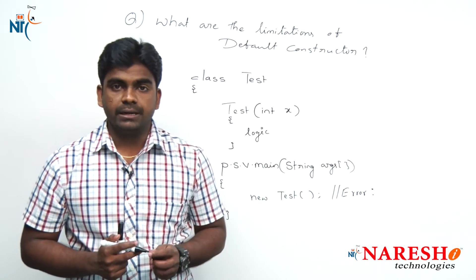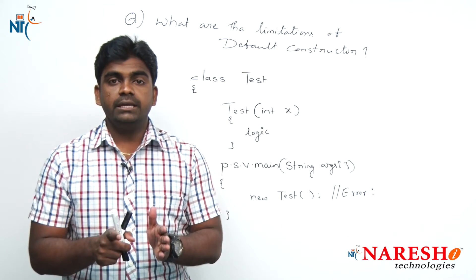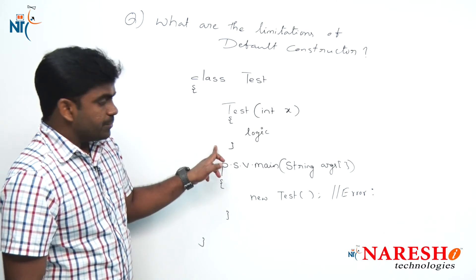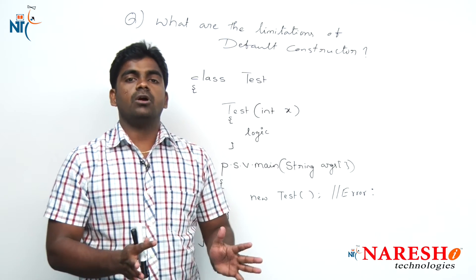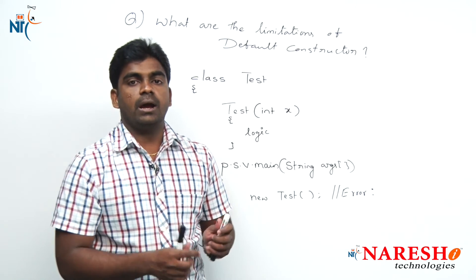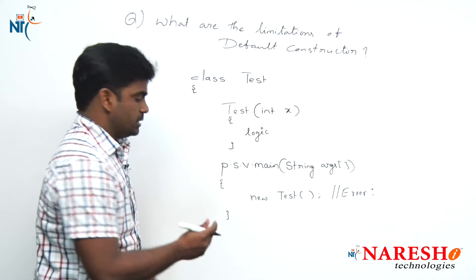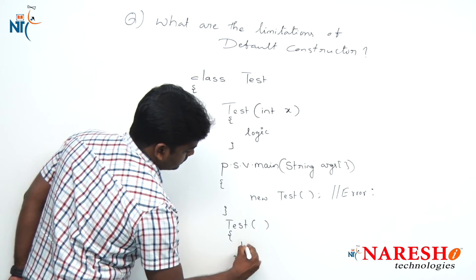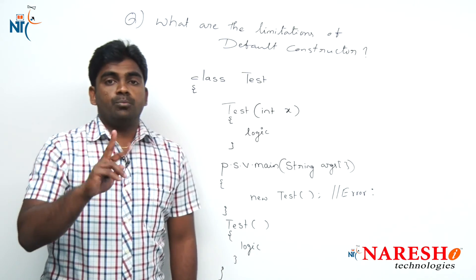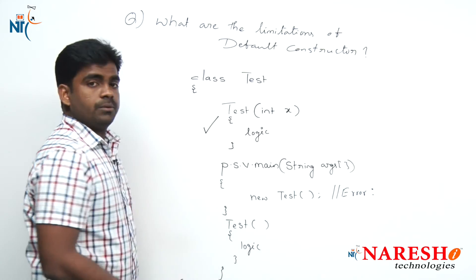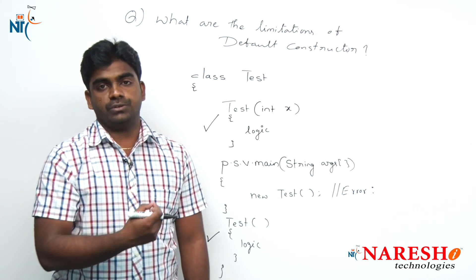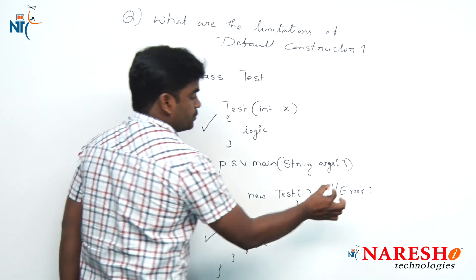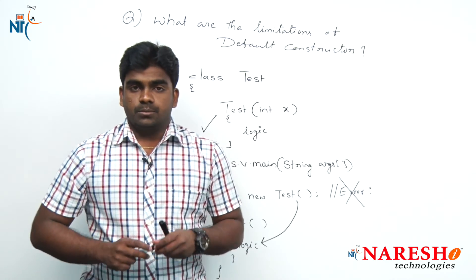So what are the limitations? The compiler supplies the default constructor only if you are not providing any constructor definition in your Java source code. Remember: if you write any arguments constructor, the compiler will not supply the default constructor. In that case, you have to explicitly write a zero arguments constructor with some logic. Now you have to define both the arguments constructor and the zero arguments constructor. Now it is your choice — if you want to call the zero arguments constructor, it will execute without any error message.